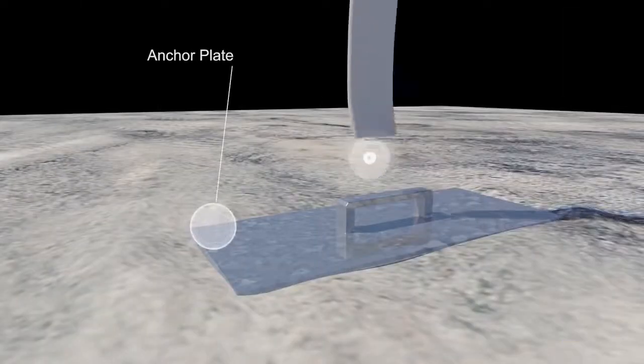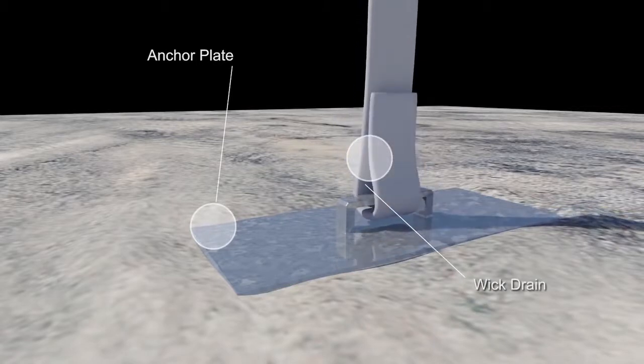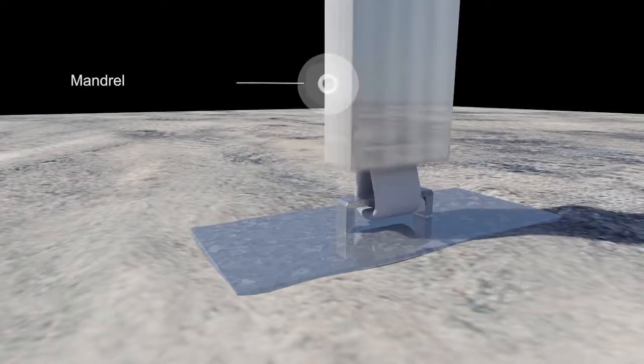An anchor plate is attached to the end of the PVD. To achieve each installation, PVDs are installed into the ground using a hollow mandrel that houses and protects the PVD material.